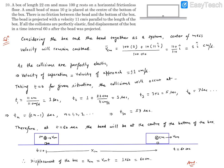Let's consider the box and the bead together as a system. In this system, box and bead are going to collide and there are going to be internal forces acting. But in the horizontal direction there is going to be no external force, because friction is absent and all forces during collisions are internal. So we can claim that linear momentum is conserved in the horizontal direction, which equally means the center of mass velocity will remain unchanged.